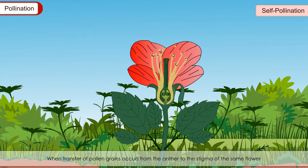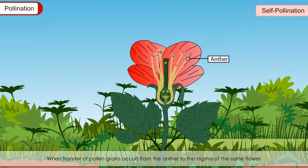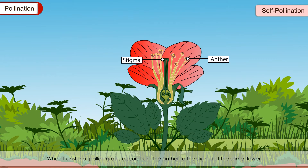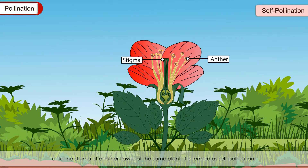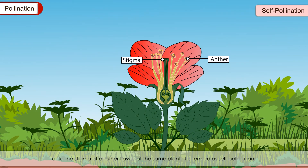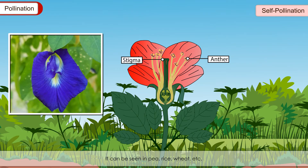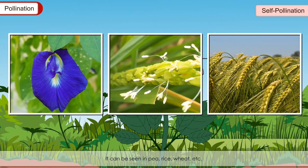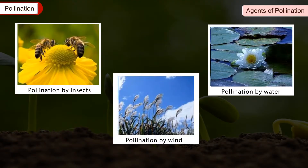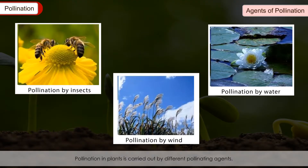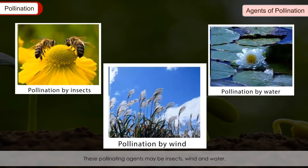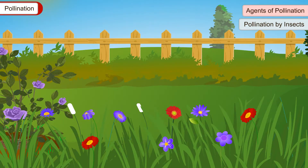Self-pollination occurs when pollen grains are transferred from the anther to the stigma of the same flower, or to the stigma of another flower of the same plant. It can be seen in pea, rice and wheat. Pollination in plants is carried out by different pollinating agents, which may be insects, wind or water.